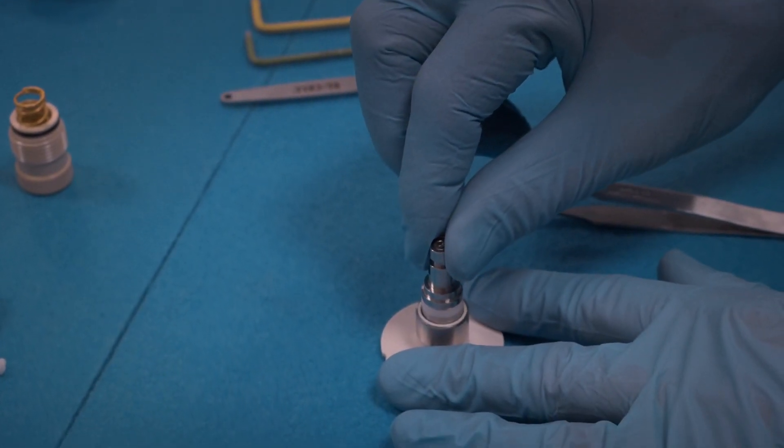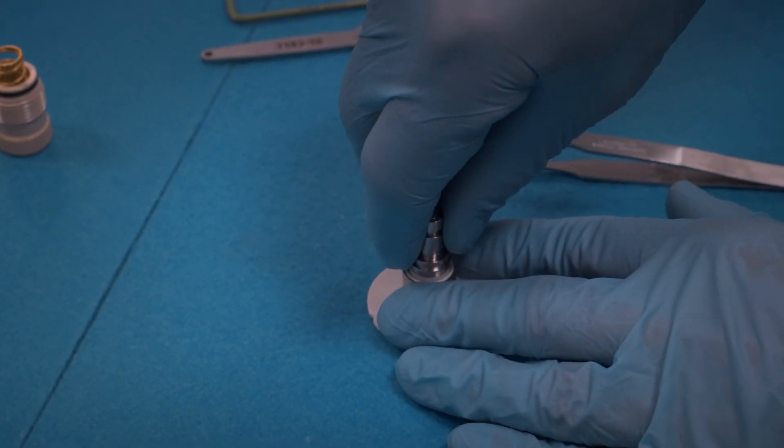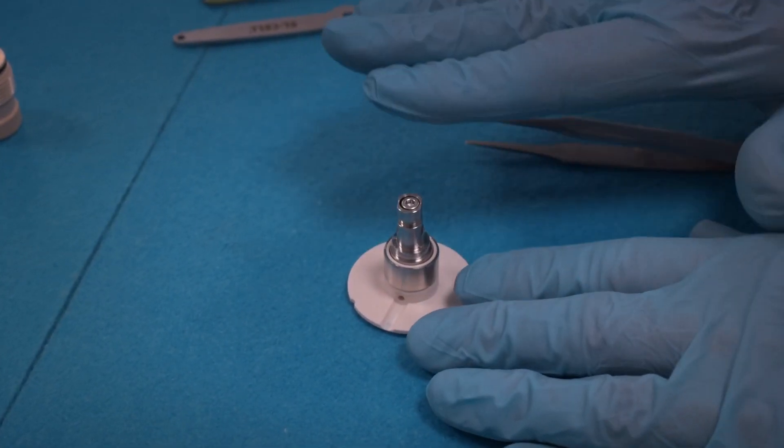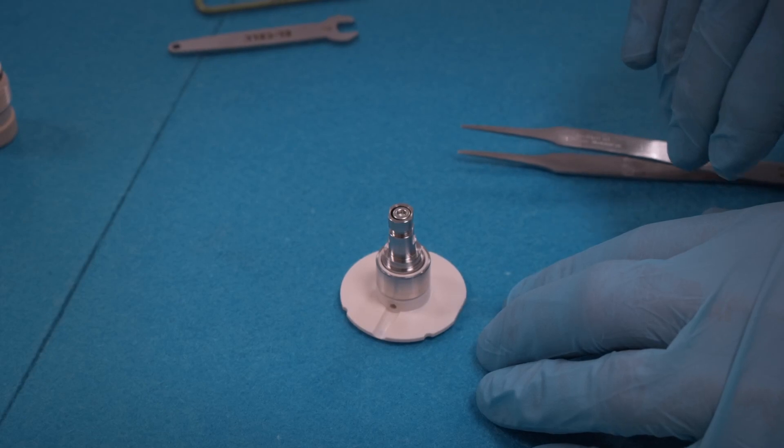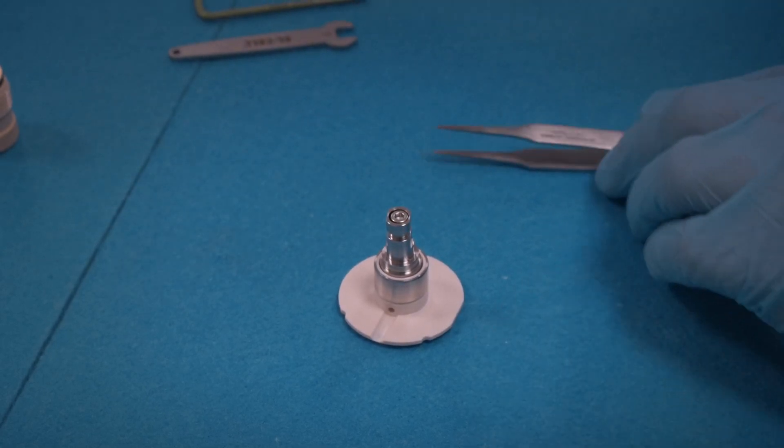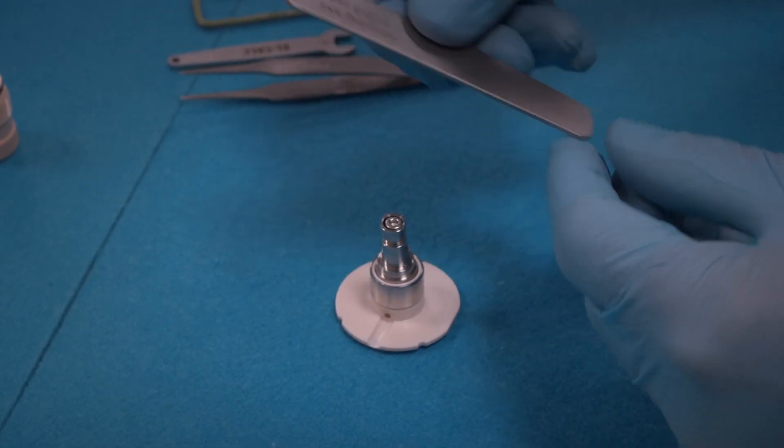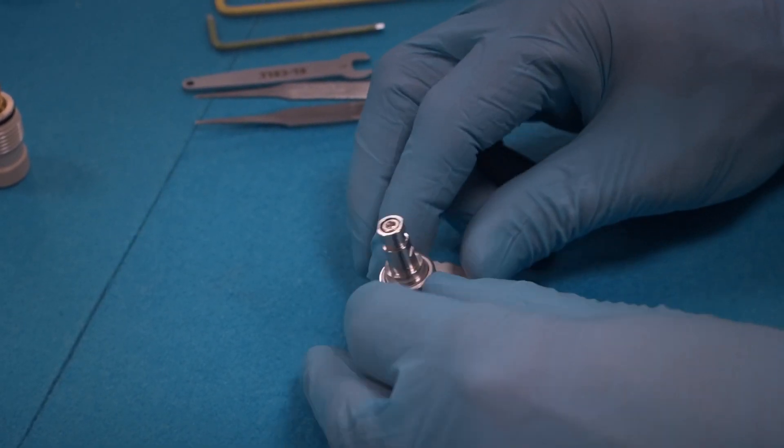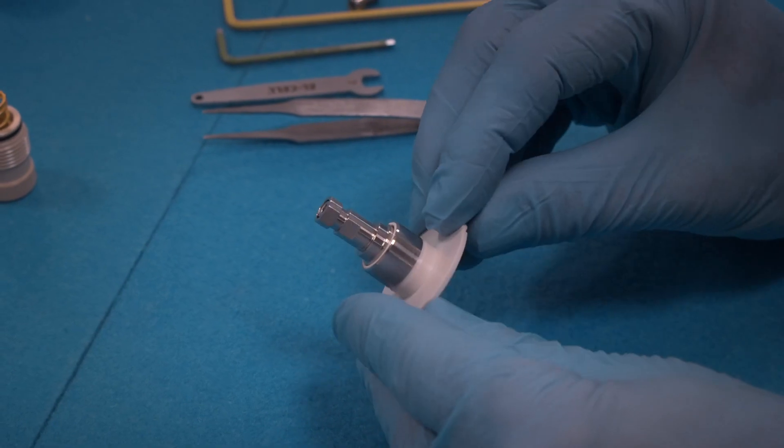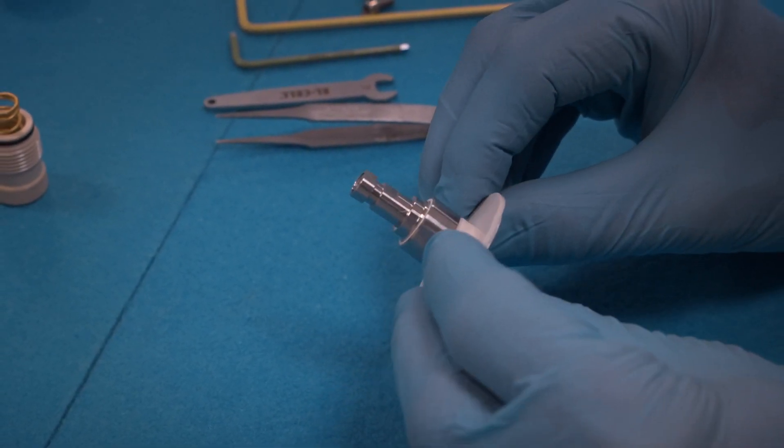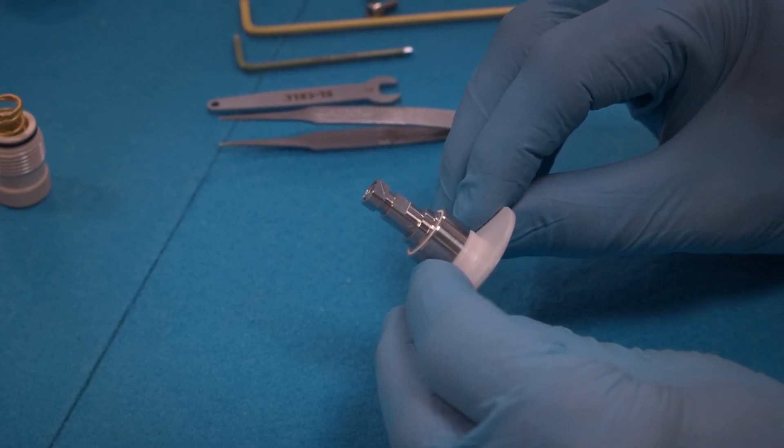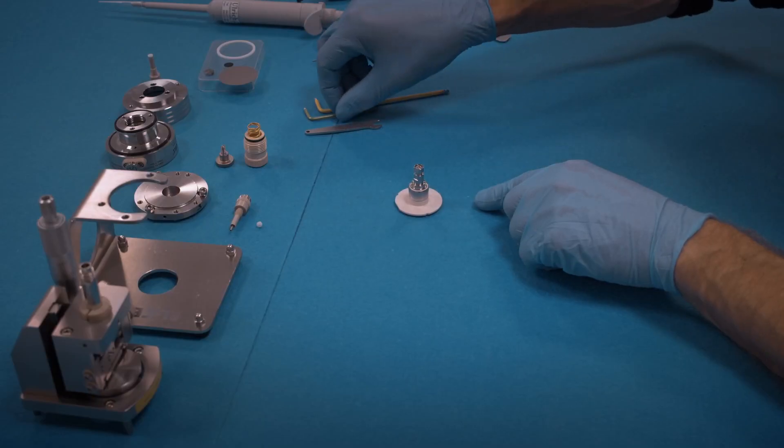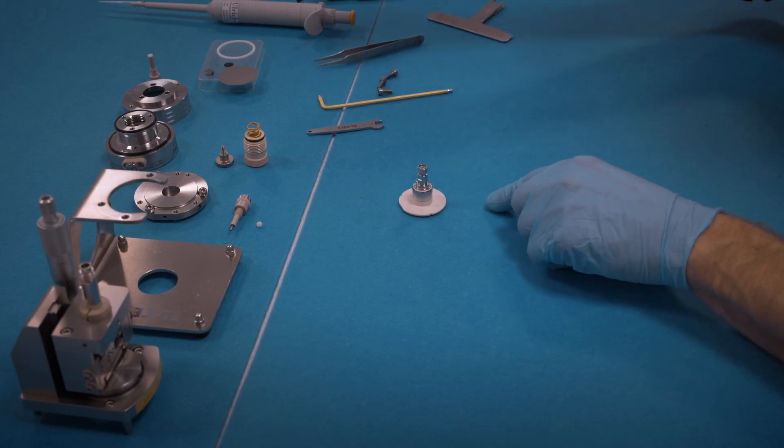Insert the piston into the frit flange. You have to apply significant force to bring the piston down. We recommend using this helping tool to press onto the piston. Make sure that the seals are no longer seen so that the piston is really down, and only then tighten the center screw.